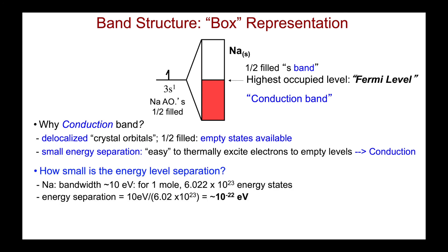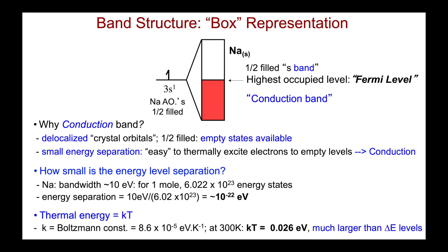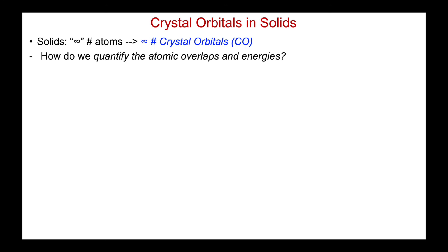How small is that energy level separation? For sodium, this bandwidth is roughly 10 electron volts. If I had one mole of sodium atoms, I'd have one mole — Avogadro's number — of energy states between the top and the bottom. Dividing 10 eV by the number of levels, the separation is 10 to the minus 22 electron volts. At room temperature, thermal energy kT where k is the Boltzmann constant is 0.026 eV — orders of magnitude greater than the energy separation of adjacent levels. Therefore we will undoubtedly populate several unoccupied levels, allowing conduction properties to take over. So we've reviewed much of this; now let's go a step further and see how we can start to quantify, in a slightly more rigorous sense, the crystal orbitals in solids.